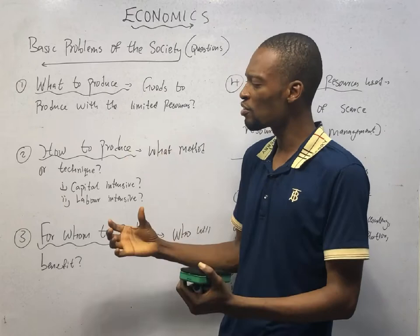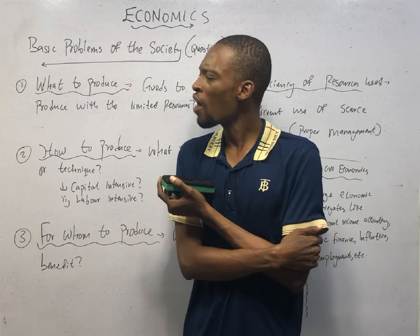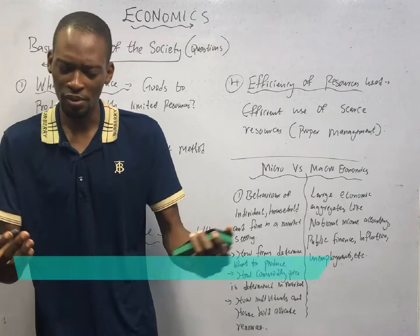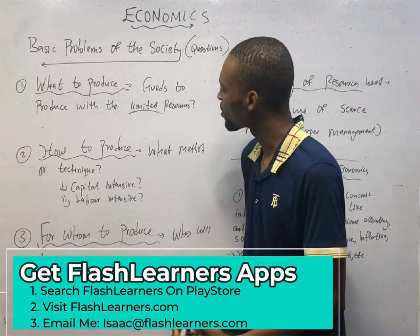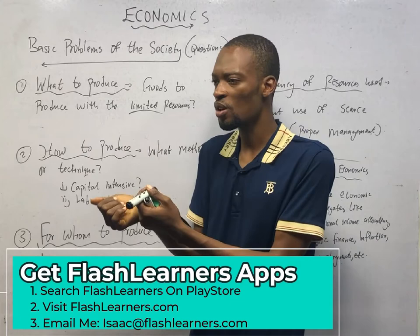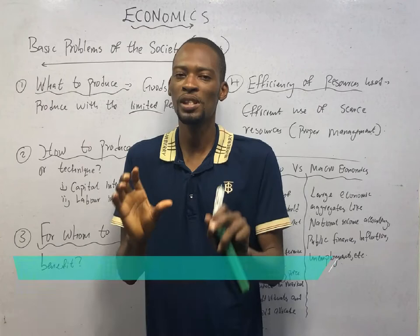The economic problems or problems of the society are: what to produce, how to produce, for whom to produce, and efficiency of resources used. What to produce deals with deciding what goods to produce with limited resources. This is a major question requiring careful reasoning — if you produce what you should not, as a firm you will run at a loss. You need to know what to produce so that people will want it and you will get a big market.